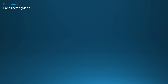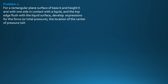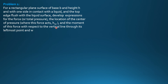Example 1. For a rectangular plane surface of base B and height H, with one side in contact with the liquid and the top edge flush with the liquid surface, develop expressions for the force or total pressure, the location of the center of pressure where this force acts — A sub Cp from the liquid surface — and the moment of this force with respect to the vertical line through its leftmost point and with respect to the bottom.